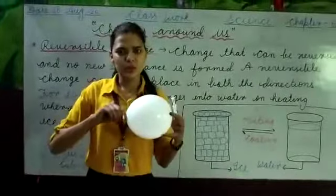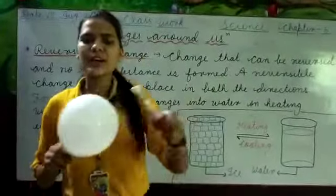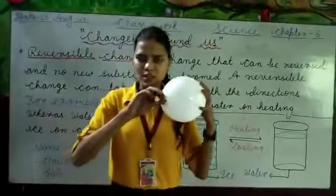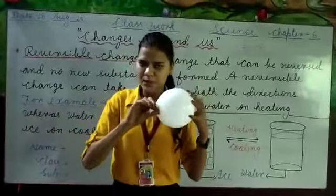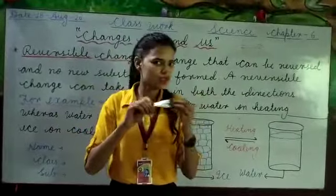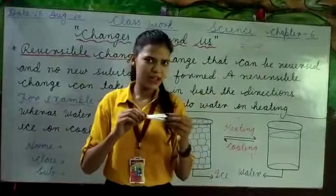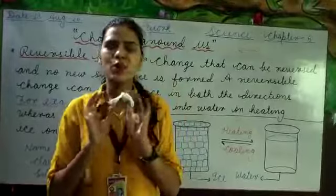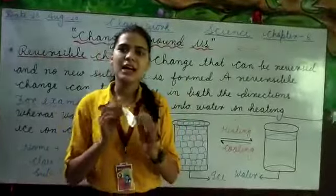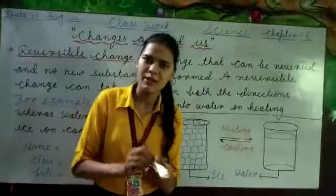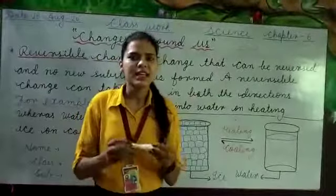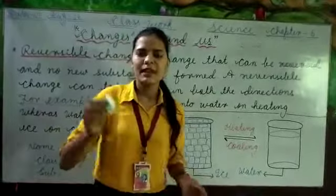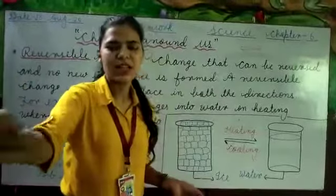Now we have another example. This is a balloon. So our balloon is now filled with air. I can release this air, and then I can fill it again. The shape has been changed, but it will not create a new substance — we can still pump it again with air. So this is a reversible change.